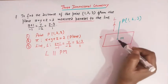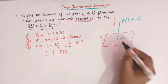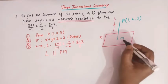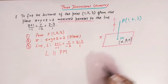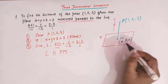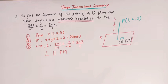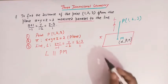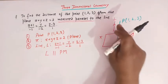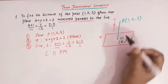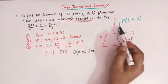In order to find this distance PM, we need to find the coordinates of point M. Let us take the coordinates of point M as (α, β, γ). Once we obtain the values of α, β, and γ, we can find the distance PM using the distance formula. So let us proceed to find the coordinates of point M by finding the equation of PM. Remember, L is parallel to PM.